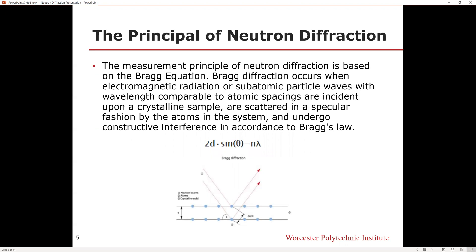The measurement principle of neutron diffraction is based on Bragg's equation. Bragg diffraction occurs when electromagnetic radiation or subatomic particle waves with wavelengths comparable to atomic spacing incident upon a crystalline sample are scattered in a specular fashion by the atoms in the system and undergo constructive interference according to Bragg's law.